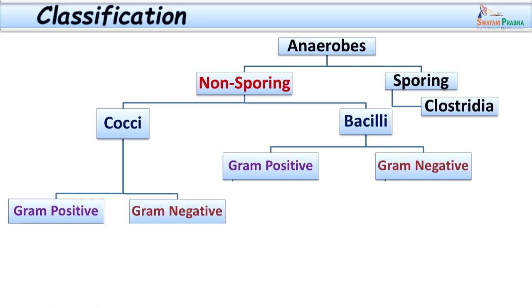Anaerobic bacteria are classified according to their Gram stain nature and whether they are spore forming or non-spore forming. The two main groups are non-spore forming and spore forming anaerobic bacteria. The spore forming ones are beyond the purview of today's class. Let us consider the non-sporing anaerobic bacteria.